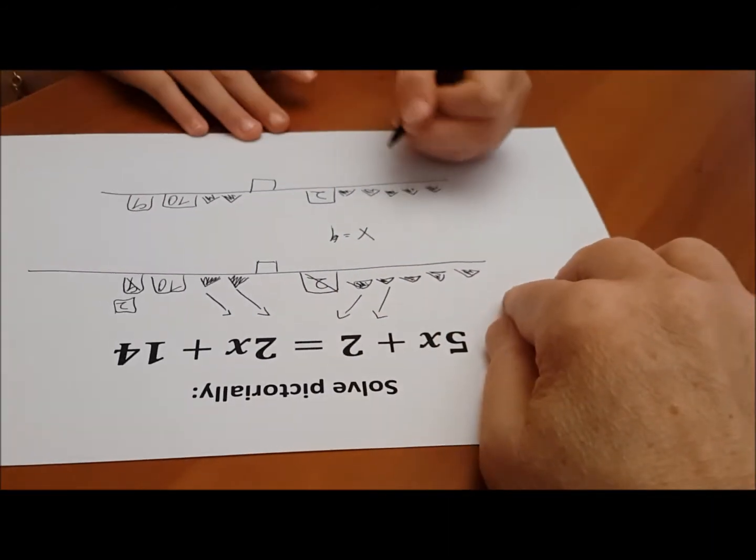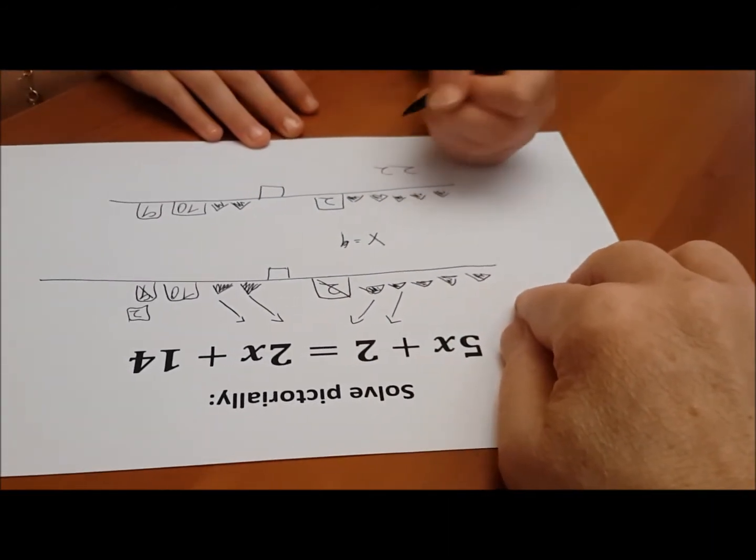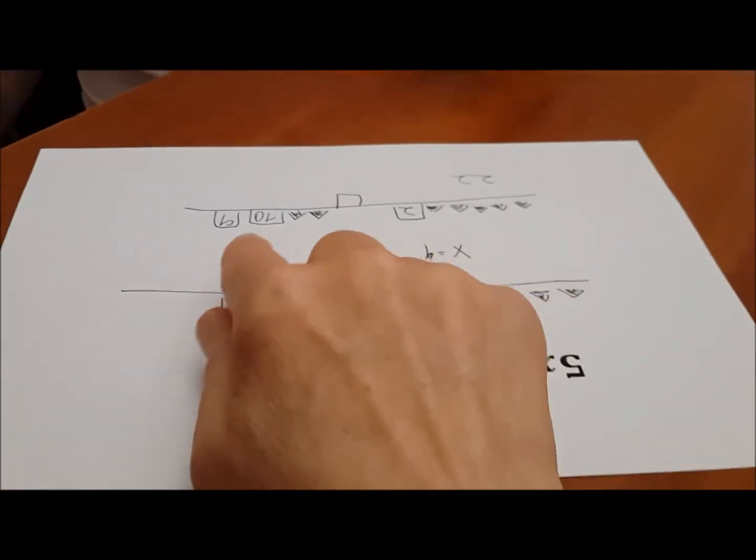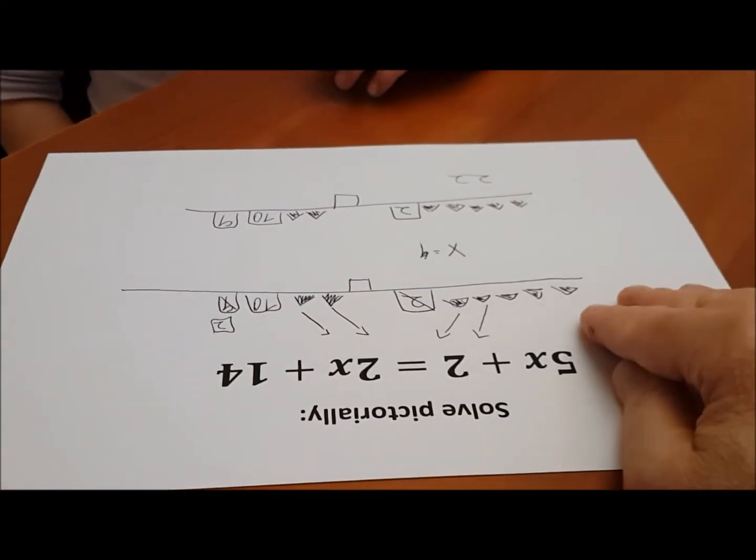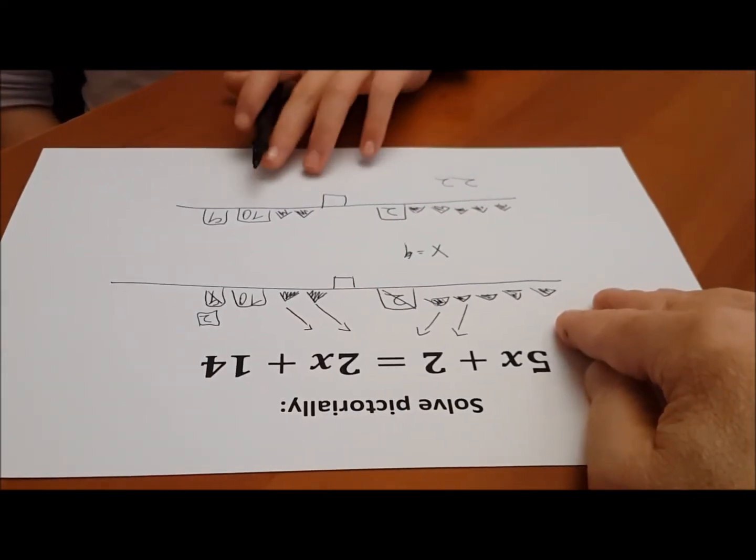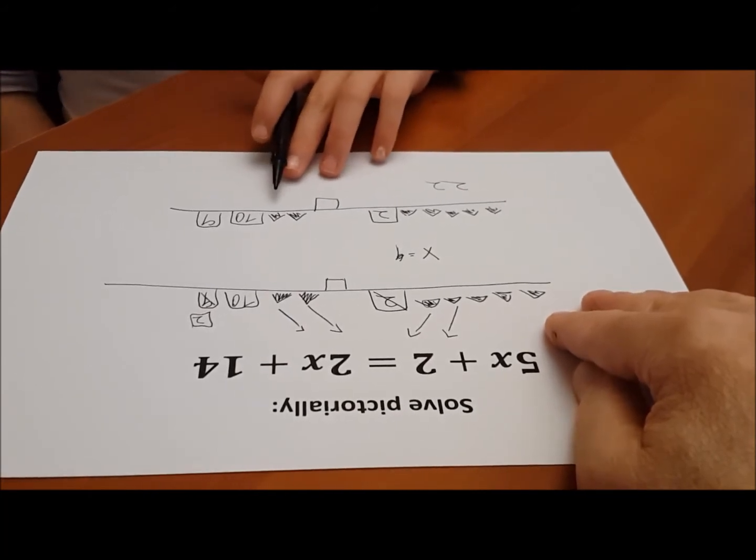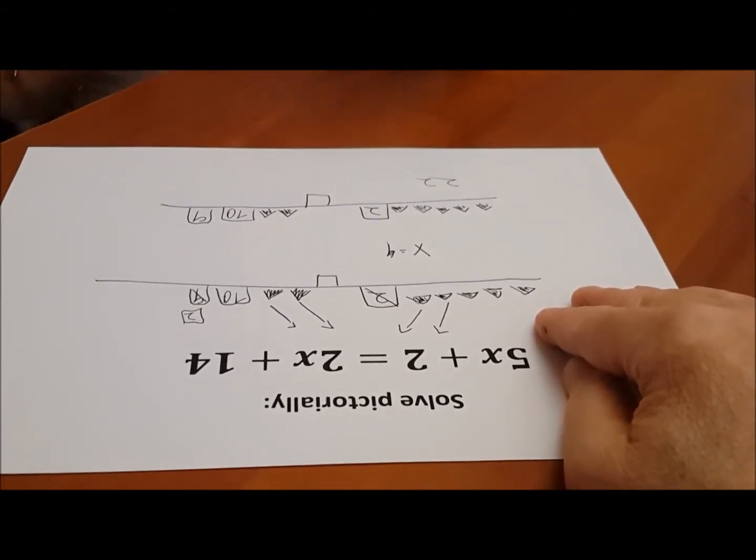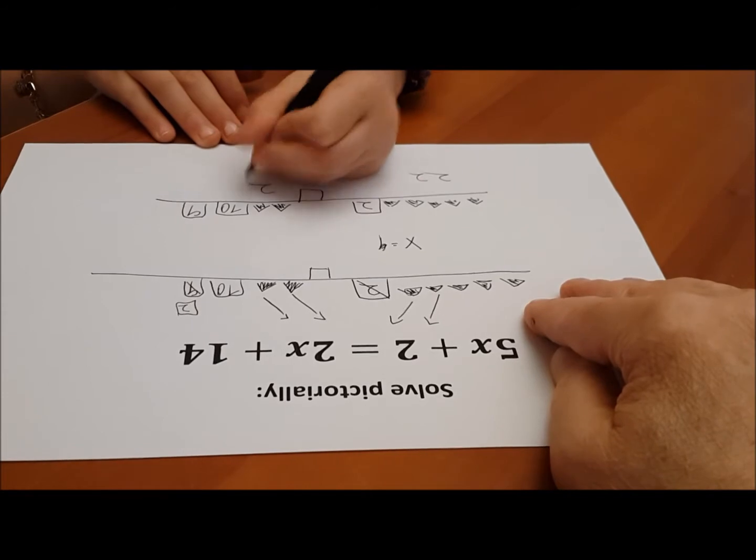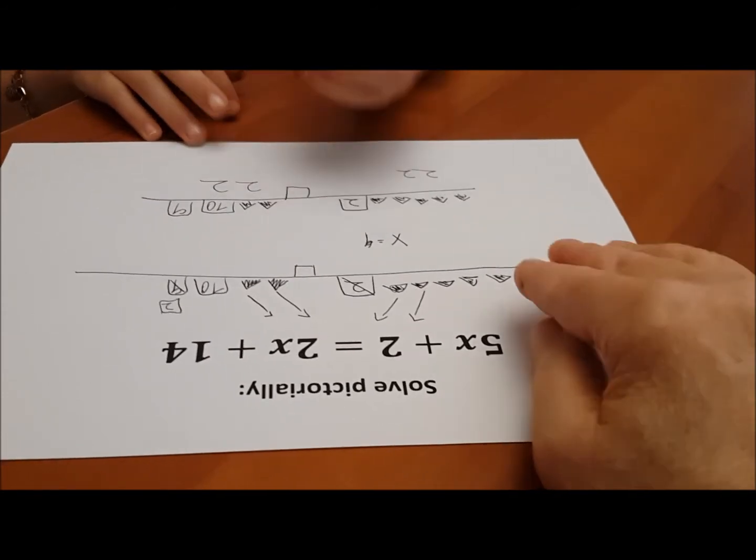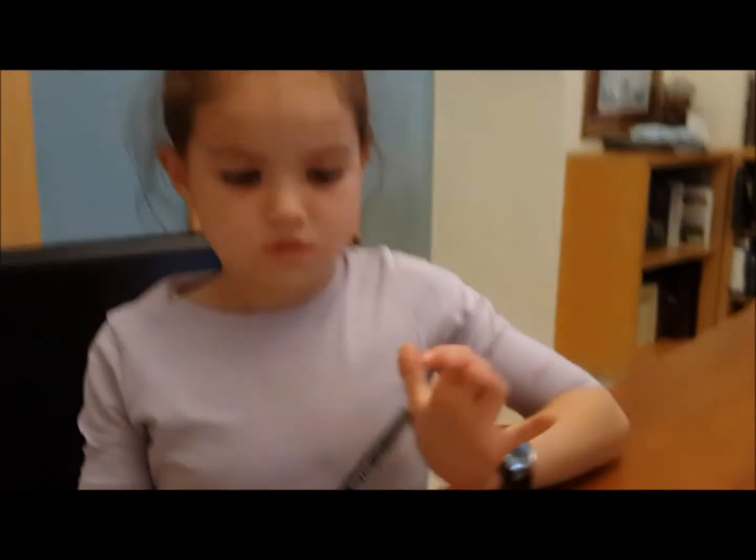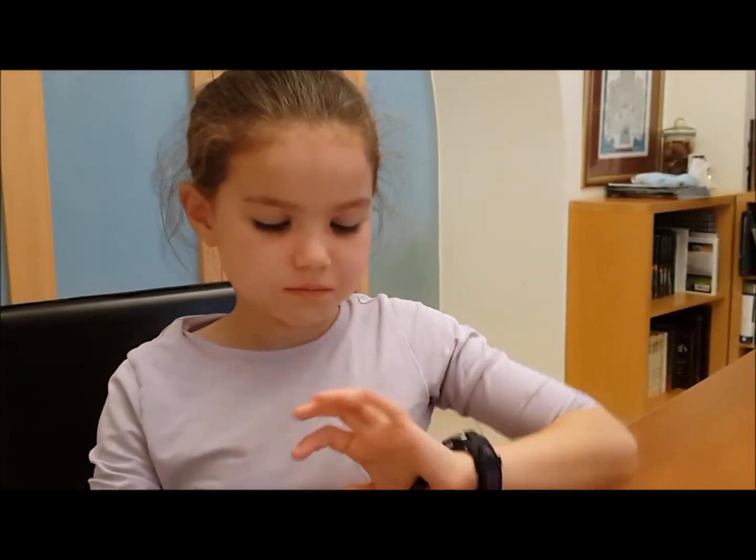Please write 22 underneath there. Now if each one is 4, what do we have on that side? 14, 18, 22. Very good, so you did a nice pictorial solution. Congratulations, that was very nice.